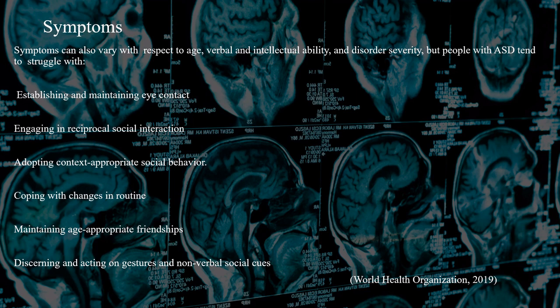People with Autism Spectrum Disorder tend to struggle with establishing and maintaining eye contact, engaging in reciprocal social interaction, adopting context-appropriate social behavior, coping with changes in routine, maintaining age-appropriate friendships, and discerning and acting on gestures and non-verbal social cues.